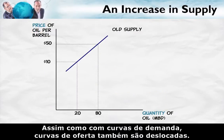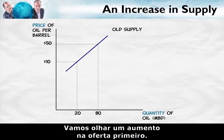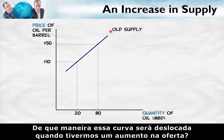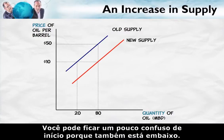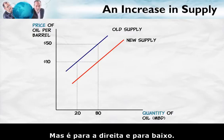As with demand curves, supply curves can also shift. Let's look at an increase in supply first. Which way is this curve going to shift when we have an increase in supply? Keep in mind that the quantity is along the horizontal axis, so which way would be an increased quantity? It's like this — you might be a little confused at first because that's also down, but it's to the right and down.